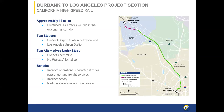The Burbank to Los Angeles high-speed rail section is approximately 14 miles in length. It begins at the Burbank Airport Station below ground and ends at Los Angeles Union Station. We have two alternatives under study: the project alternative and the no-project alternative. The benefits include improving operational characteristics for passenger and freight services, improving safety, and reducing emissions and congestion because the train is electrified and will get people out of their autos and airplanes and onto the train.